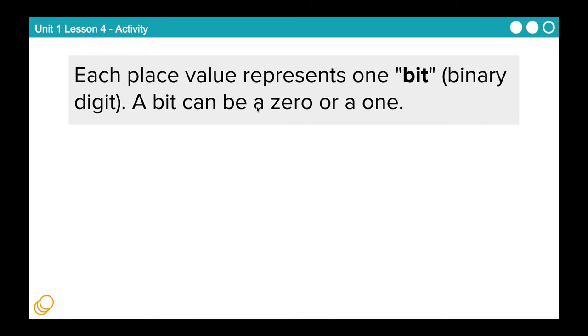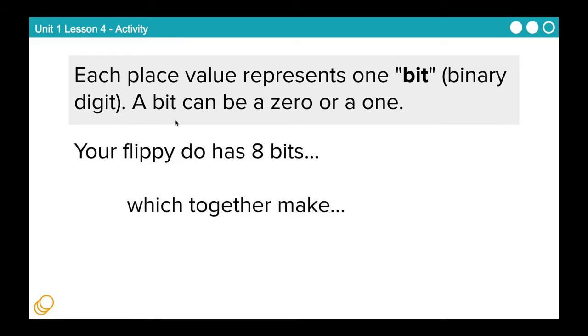Okay, so if you've completed your Flippy-Doo, you'll notice that there are eight slots on it. So let's go over why we put eight slots on there and not nine or ten or what have you. So each place value in the Flippy-Doo represents one bit. So a zero or a one, that's all a bit can be. It's a binary digit. We call it a bit for short. And a bit is the smallest amount of data that can exist, at least in computer science. We're talking about the atoms of computer science here. So a bit can be a zero or a one, like a circle or a square. Your Flippy-Doo has eight bits, which together make one byte. So remember that eight bits equals one byte. And that is why your Flippy-Doo has eight slots on it.